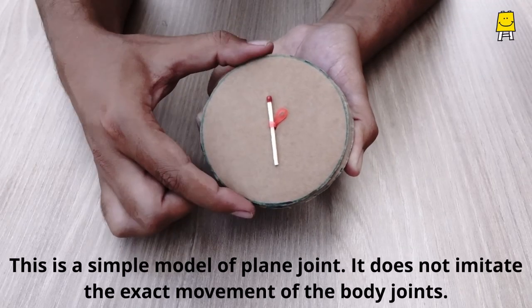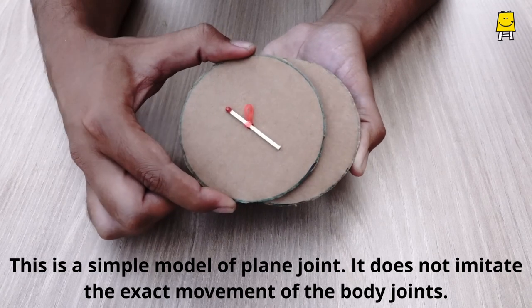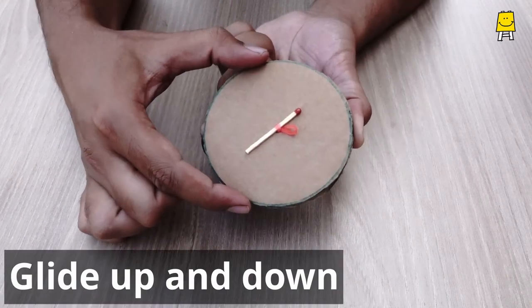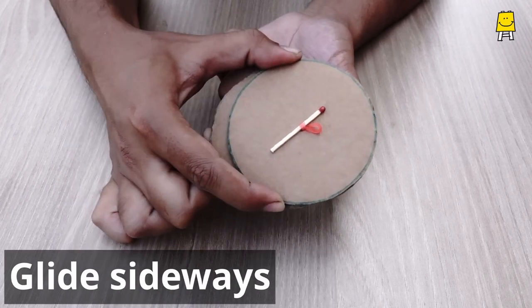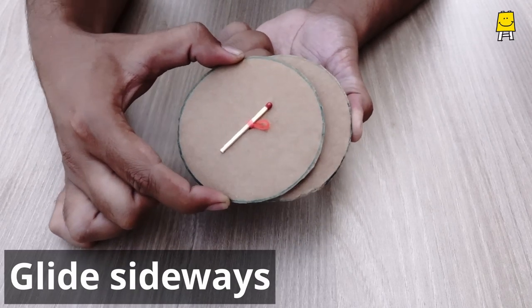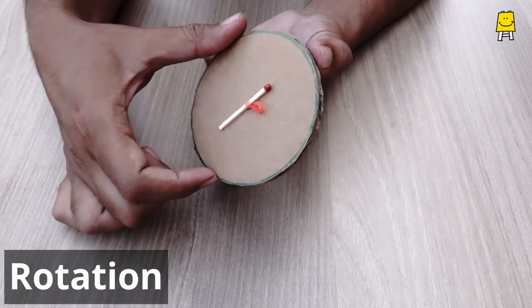Here you have a simple model of a plane joint. It can glide up and down, sideways, and rotate to some extent.